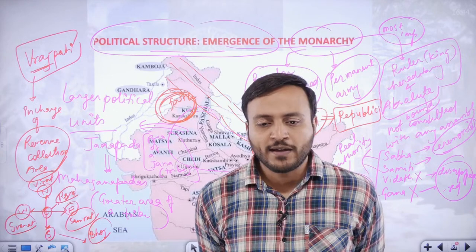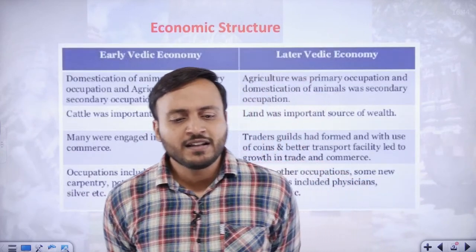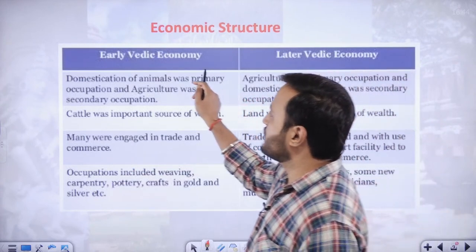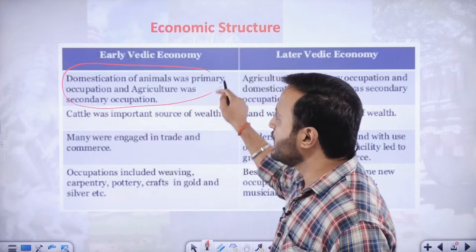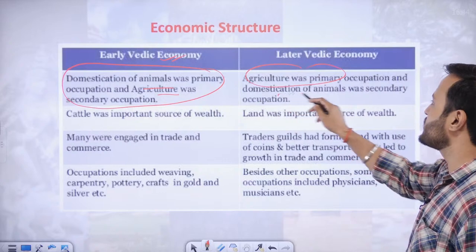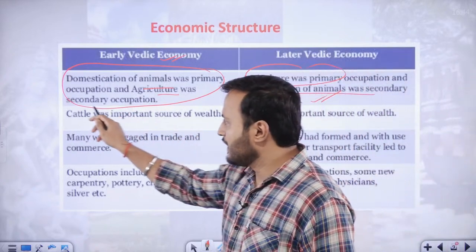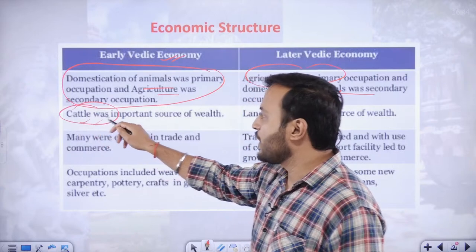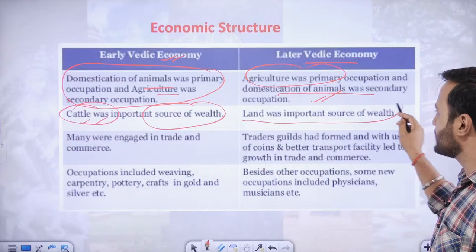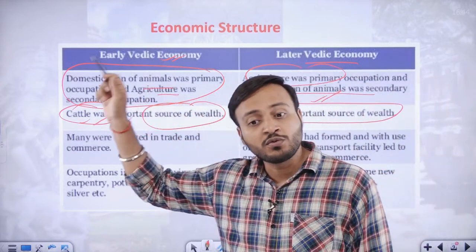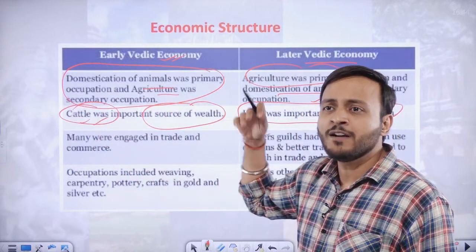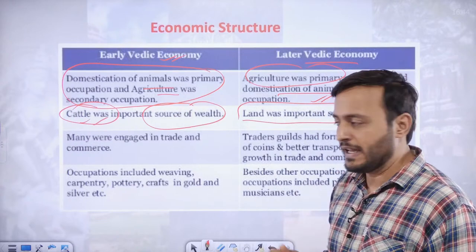The nature of economy also changed completely. Domestication of animals was the primary occupation during the Vedic culture and agriculture was secondary. Here in the later Vedic period, agriculture became primary and domestication became secondary. In the early Vedic, cattle — cow, bull, etc. — were the important source of wealth. In the later Vedic, land became the source of wealth. The fight that used to occur due to cow stealing now occurred due to occupation and demand of land.